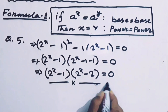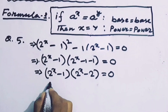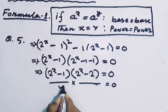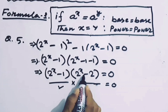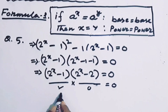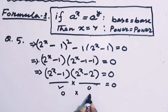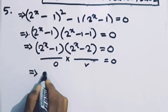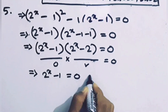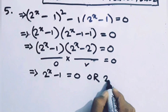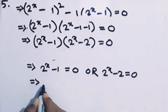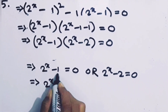Here we have a product of two factors equal to zero, which means any one of the two factors must be zero. So we can write: 2 to the power x minus 1 equals 0, or 2 to the power x minus 2 equals 0. This implies 2 to the power x equals 1, or 2 to the power x equals 2.